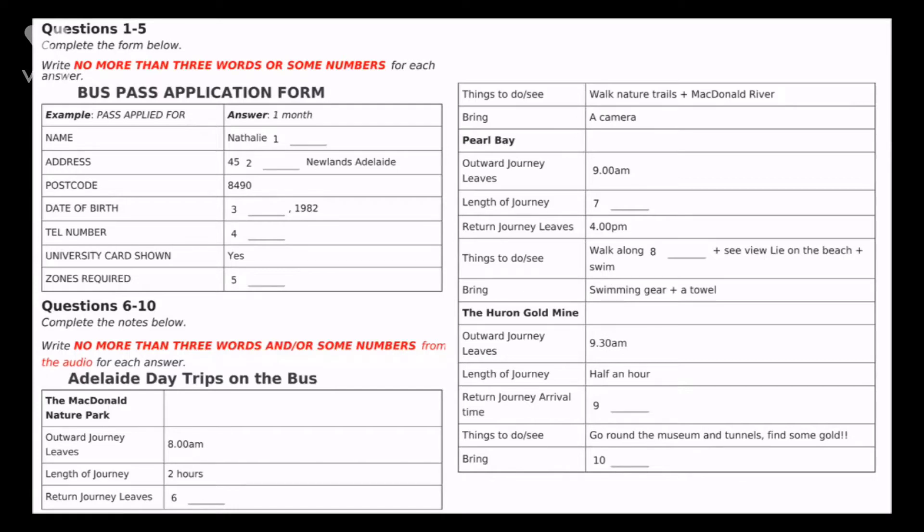Now turn to section 1. Section 1. You will hear a conversation between two women as one of the women buys a bus pass. First you have some time to look at questions 1 to 5. You will see that there is an example. This time only, the conversation relating to this will be played first.